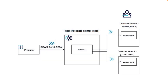Let's see this with a diagram. We have a producer which produces three events — NEW, CANCEL, and PRE-ADVISE — to a topic. We have two consumers. We want our first consumer to consume only NEW and PRE-ADVISE events, but not the CANCEL event. Similarly for consumer two, we want it to consume only CANCEL and PRE-ADVISE events, but not NEW events.